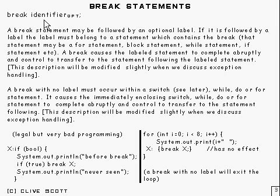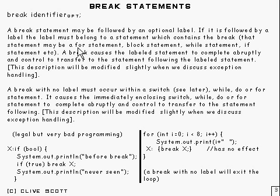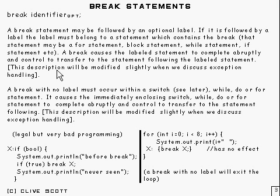A break statement consists of 'break' followed by an optional identifier, and that identifier refers to a label. If it's followed by a label, it must refer to a statement which contains the break itself. That statement could be a for statement, a block, or a while statement, or even an if statement. When this break is executed, it causes the labeled statement to complete abruptly, and control transfers to the statement that follows the labeled statement.